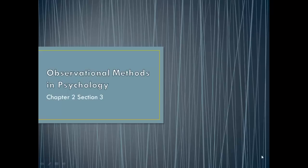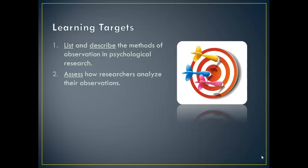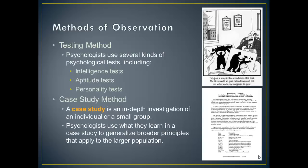Hello again and welcome back to Psychology with Mr. Snyder. Today we're going to talk about Chapter 2, Section 3, about how we observe and test in psychology. Here are your learning targets. We're going to list and describe the different methods of observation and then talk about how researchers analyze those observations. But first, let's go over these methods of observation.